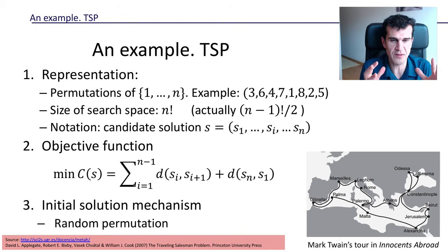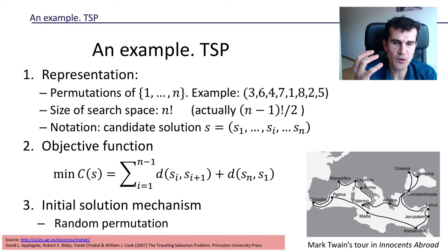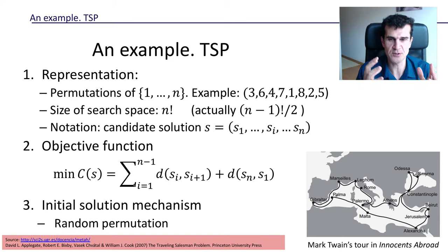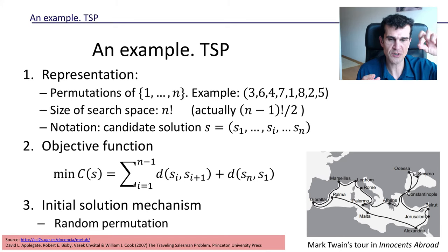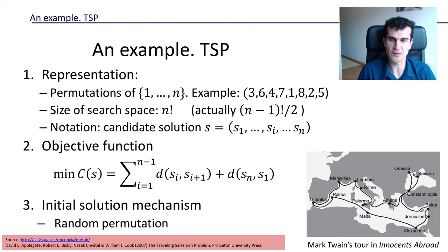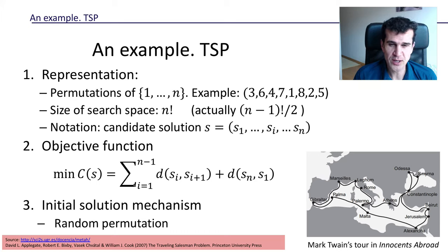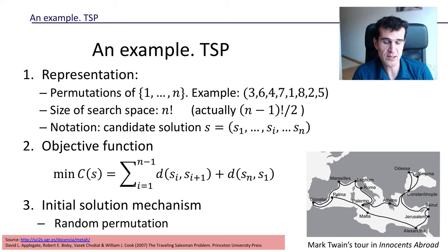The next thing we have to decide is which initial solution to start from — what tour we want to use as our initial solution for local search. Remember, in local search we start at an initial solution, look at neighboring solutions, and try to move downhill in the landscape of tour lengths. When we don't know much about the problem, a natural choice is a random permutation — a random solution — and this is a commonly used approach.